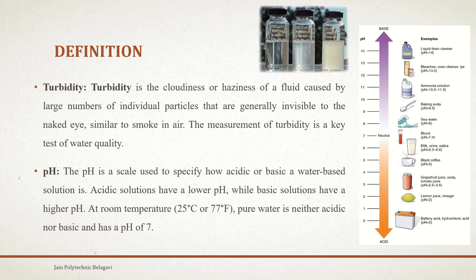Battery acid and hydrochloric acid represent the extreme acidic end, with a pH around 0. On the basic side, sea water is around pH 8, baking soda is 9.5, ammonia solution is 10.5 to 11.5, bleach and oven cleaner are around 13.5, and liquid drain cleaner used for cleaning basins and bathrooms has a pH value of around 14.